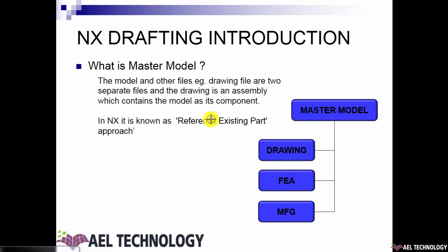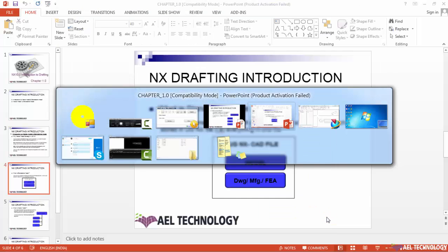Let us see what a master model is. The model and other files — for example, a drawing file, a manufacturing file, or any other files — are separated from each other. The drawing file is separated, and the drawing is an assembly which contains the model as its component. In NX, it is also known as the reference existing part approach. The master model is the 3D CAD model, an individual component, which becomes a component in a drawing assembly file, an FEA assembly file, or a manufacturing assembly file.